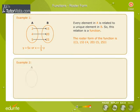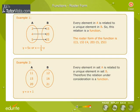Example 2: Set A has elements 11, 15, 20 and set B has elements 12, 16 and 21. The relation between them is Y is equal to X plus 1. Every element in set A is related to a unique element in set B. Therefore the relation under consideration is a function. The Roaster Form of the function is {(11, 12), (15, 16), (20, 21)}.